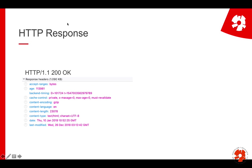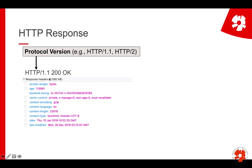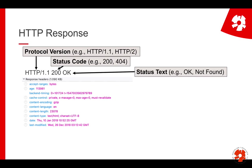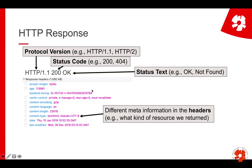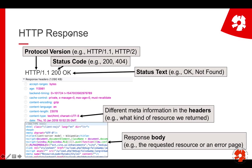If everything works, you'll get a response from the server. It includes the protocol version, a so-called status code, and human-readable text — for example, 'OK' in this case. As before, we have headers, and the response has a body. Because we requested a resource, the response should return it. If the request doesn't work, we get some kind of error message or error page. What you get back in the body is really the HTML source code of the website.